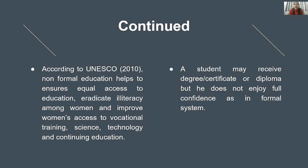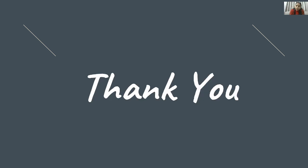Summary: Formal education deliberately educate karne ke liye banaaya gaya hai. Non-formal deliberately nahin banaaya gaya lekin partial fulfillment karta hai. Informal bilkul bhi shikshit karne ke liye nahin banaaya gaya tha lekin shikshit karta hai. So education has these three branches — we are getting education from every way: formal education, non-formal education, and informal education, and that is what we are today. Thank you all — I have completed the topic of formal, informal, and non-formal education. Short notes on this topic are frequently asked, so prepare it.